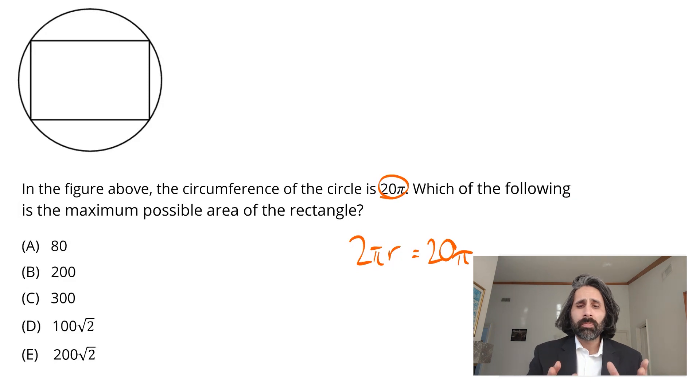Now granted, it's a geometry figure on the GRE. You never really trust that it's drawn to scale. You don't look at that and say, I'm looking at reality right now. They're giving you a vague indication of where things are relative to each other. The rectangle's inside the circle. Now we know. But this maximum possible area thing is a little bit complicated. What does it take to maximize a rectangle?